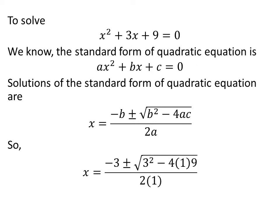So, applying this formula gives us solutions of the quadratic equation x² + 3x + 9 = 0 as x = (-3 ± √(3² - 4(1)(9))) / 2(1).